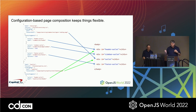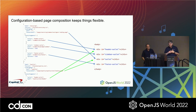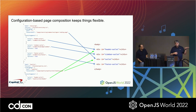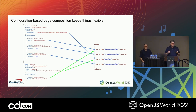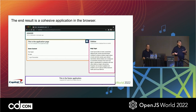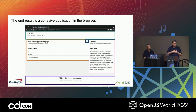Configuration-based page composition keeps things flexible — this is where the tenant concept comes into play. A servicing application might use most of the page components — simple div outlets the router knows how to swap in and out — while a quality application might only implement two of them. Each application can maintain its own look and feel. The end result is a cohesive application in the browser, with four different applications all running at once, brought together by the shell — essentially five applications in total.